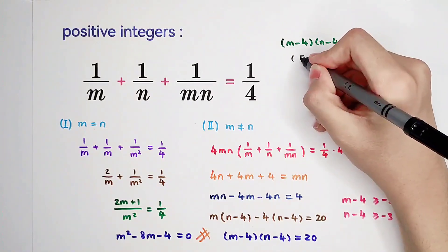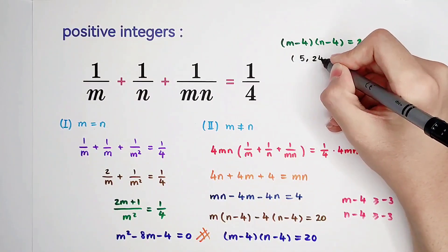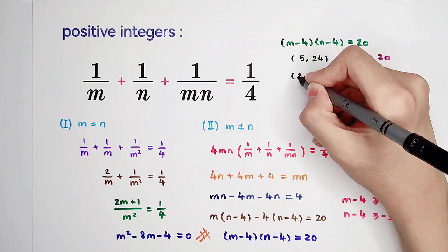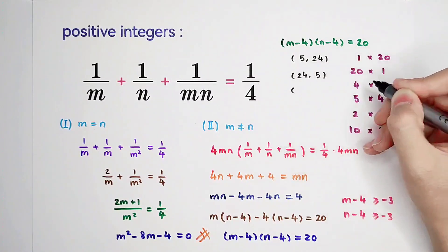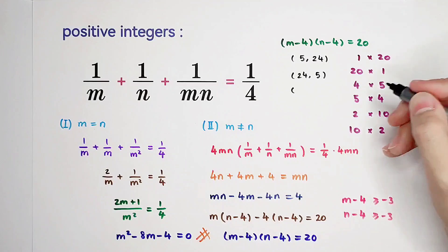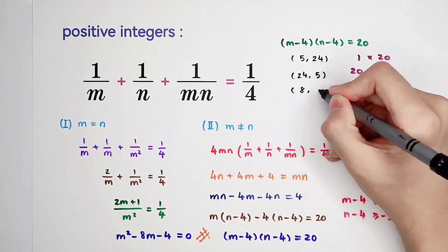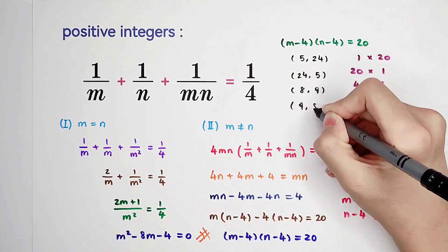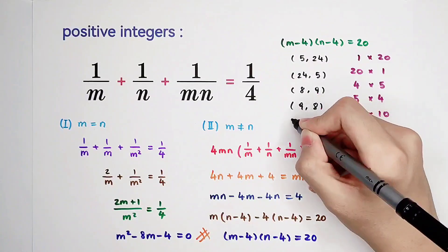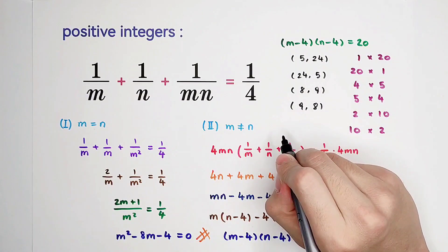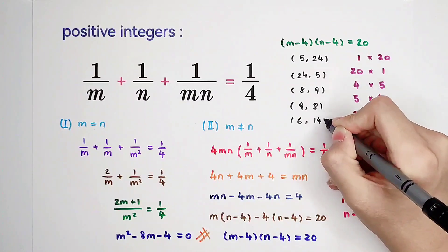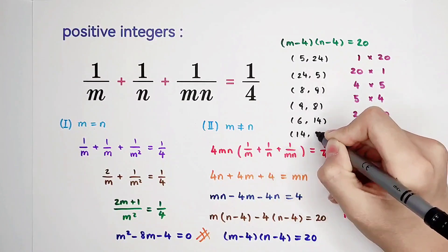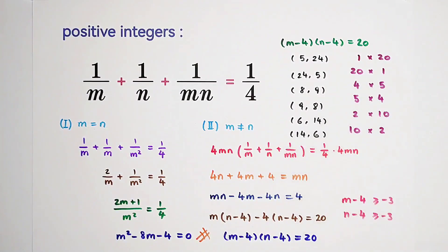Here we have 5, 24. And here we have 24, 5. Here we have 8 and 9. 9 and 8. Here is 6, 14 and of course, 14, 6. So now we have 6 pairs.